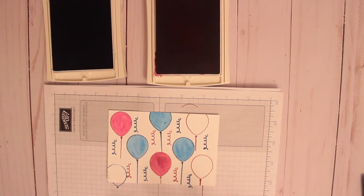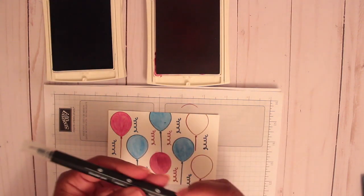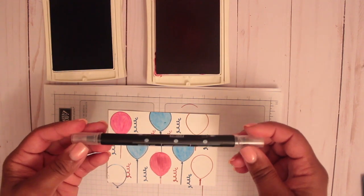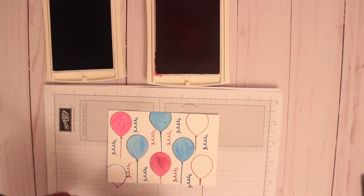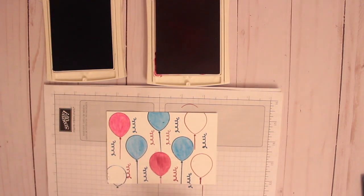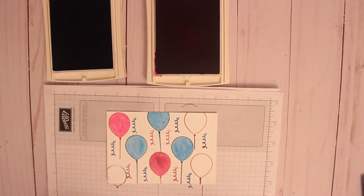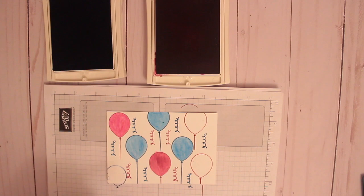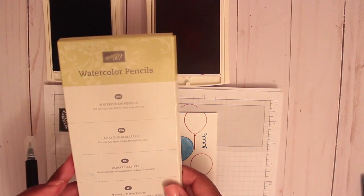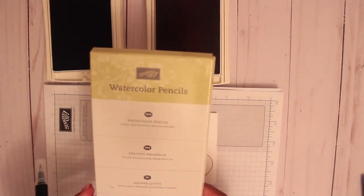Now after I did that outline, what I'm going to do is use this blender pen that Stampin' Up sells. It's pretty neat. You could use it with your ink or also with watercolor pencils. Stampin' Up also sells water pencils that you could use to color in these balloons too as well.